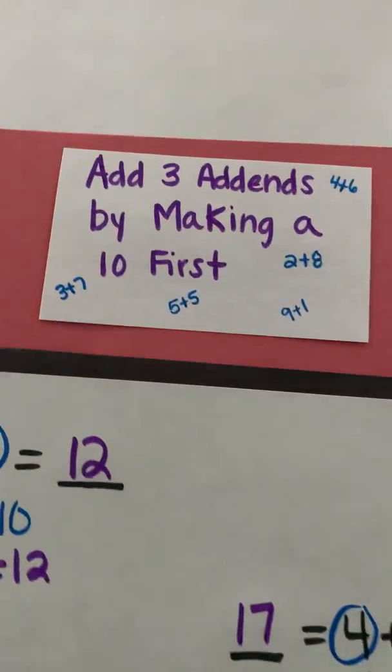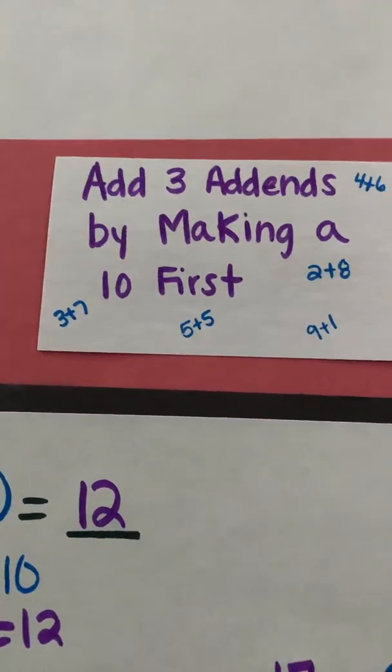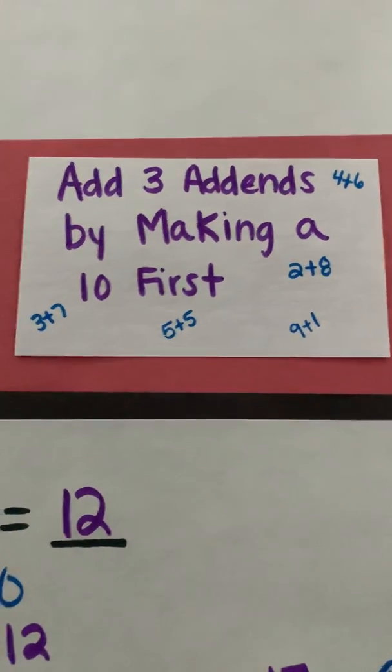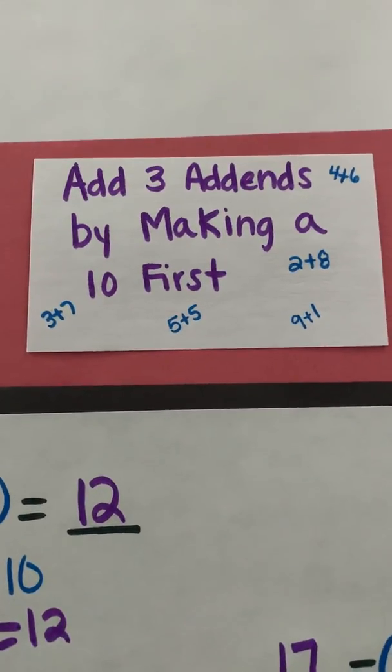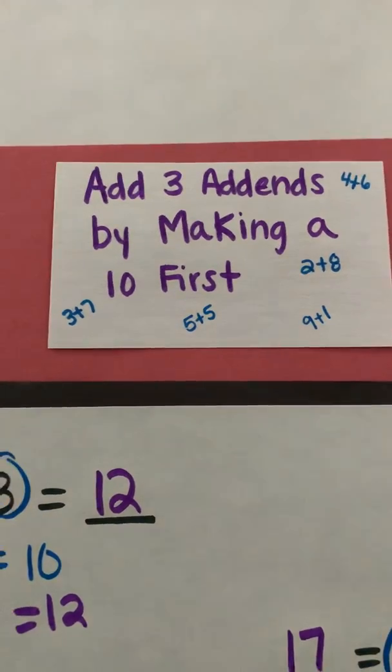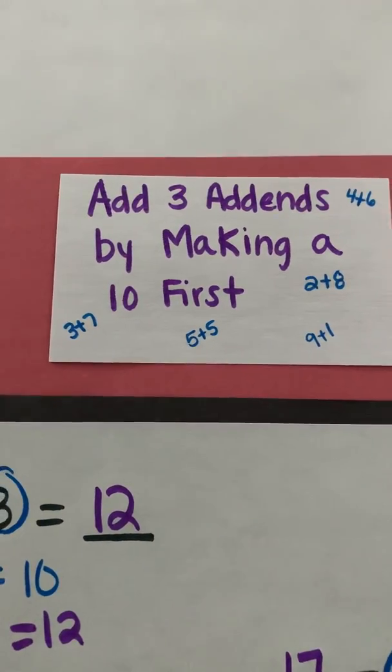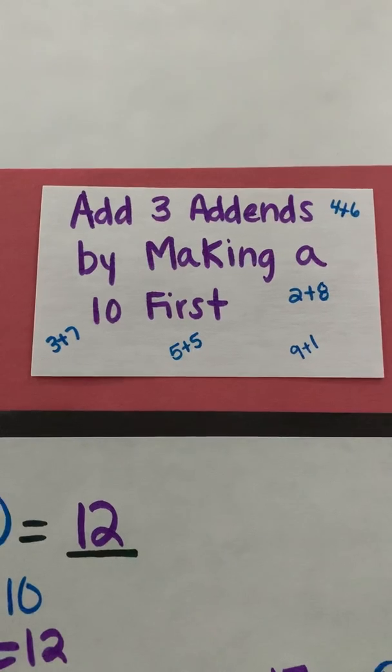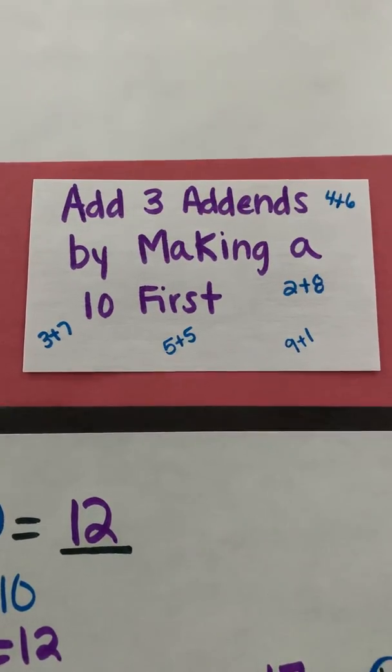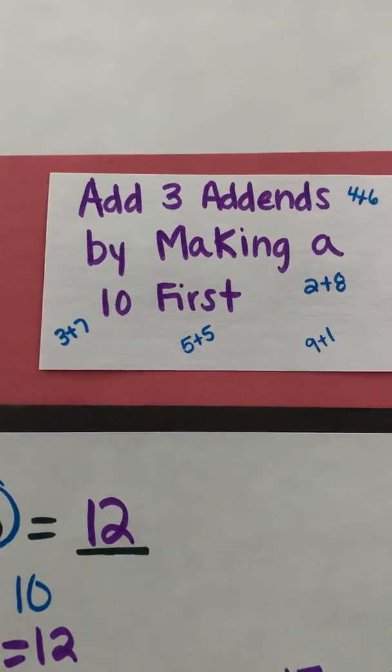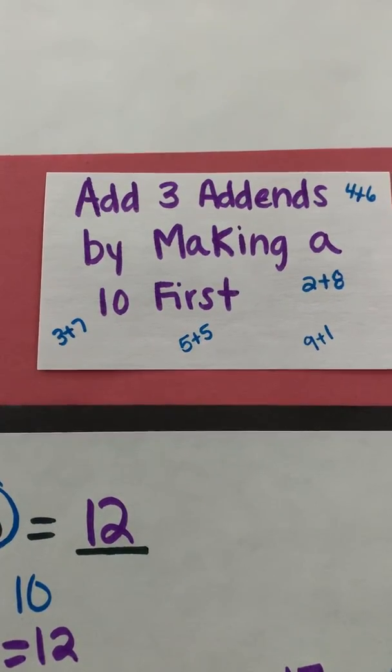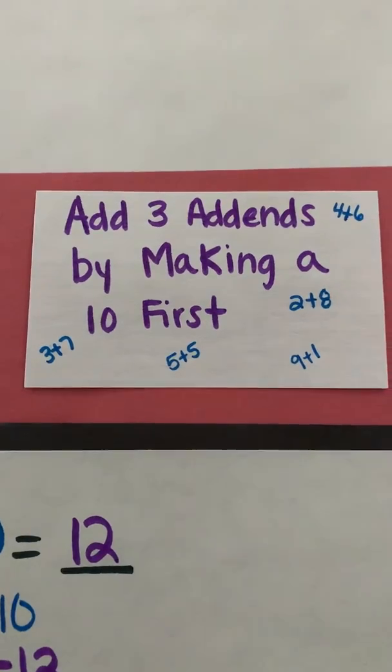All right you are now going to get to practice some of this. There is some online practice that just focuses on adding two numbers to make ten just to kind of refresh your mind so you can spot those easier within your three addends. Then you can also practice some on paper and pencil and we have some online manipulatives that you can use. Remember the day's goal is to be able to add three addends by making a ten first. Good luck!